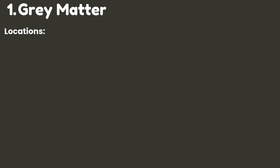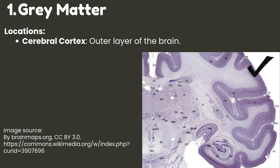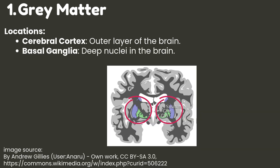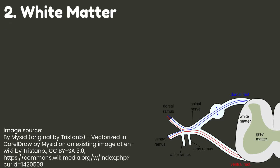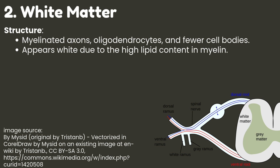Gray matter locations: in the cerebral cortex it is found in the outer layer of the brain; in the basal ganglia it is found in deep nuclei in the brain; in the spinal cord it is found in the inner regions, for example the dorsal and ventral horns. Number two: white matter structure. It is composed of myelinated axons, oligodendrocytes, and fewer cell bodies.